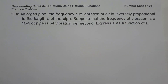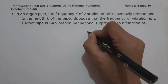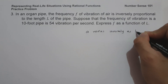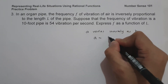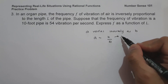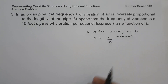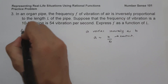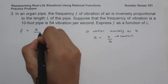On example number 3, in an organ pipe the frequency f of vibration of air is inversely proportional to the length L of the pipe. Suppose that the frequency of vibration of a 10-foot pipe is 54 vibrations per second. Express f as a function of L. To answer this, let us review inverse variation: if A varies inversely as B, then A = K/B, where K is the constant of variation. So we have F = K/L.